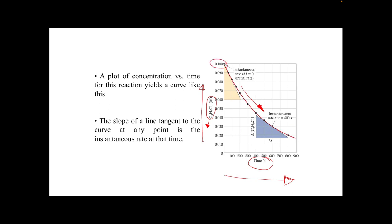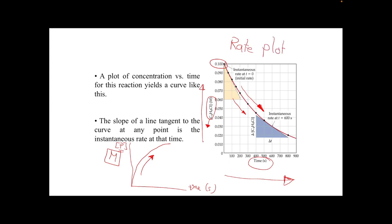In the case where we are dealing with the concentration of products, we would expect the plot to take an increasing form rather than decreasing, because the concentration of products increases over time. Here the x-axis will be time in seconds, and the y-axis will be the molar concentration of products as molarity. This is called the rate plot.